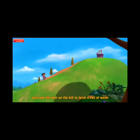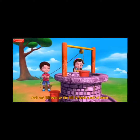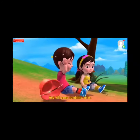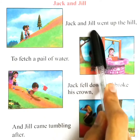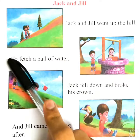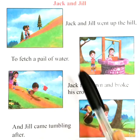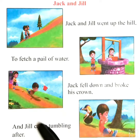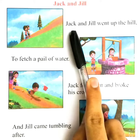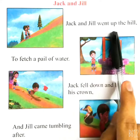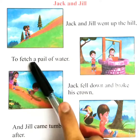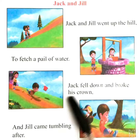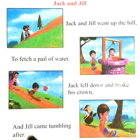Jack and Jill went up the hill to fetch a pail of water. Jack fell down and broke his crown and Jill came tumbling after.